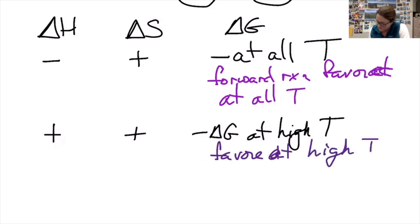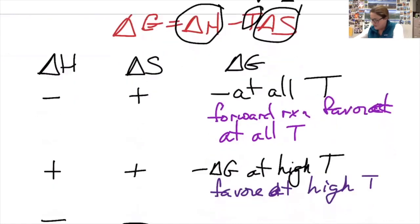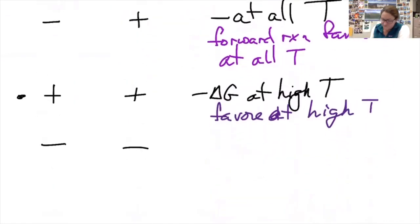Now, if I made both delta H and delta S negative, then if I have a negative value here and a negative value here, the only way I will get a negative answer is if this is a small value. Otherwise, when I'm subtracting a negative number, it's being added on. So when they're both positive, it's spontaneous at high temperatures. When they're both negative, it's favored at low temperatures.